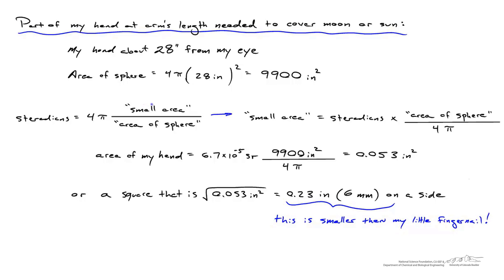The small area in this case is the area of the moon or sun as seen while holding your hand out. So the small area equals the number of steradians for the moon and sun (they're the same) multiplied by the area of the sphere swept by my hand, divided by 4π. That gives an area of about 0.05 square inches — equivalent to a square smaller than a quarter inch on a side, or smaller than 6 millimeters on a side. That's smaller than my little fingernail.